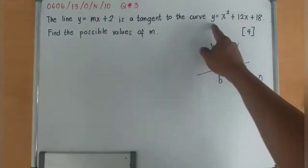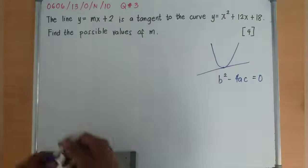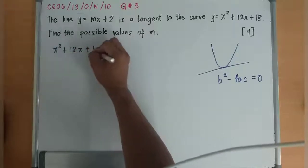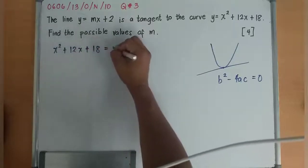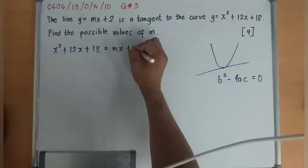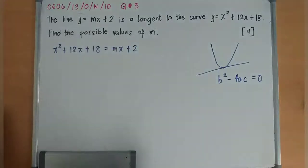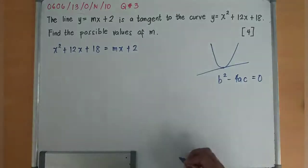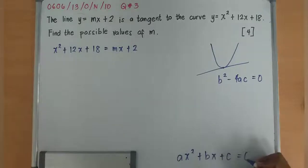...then I can have x² + 12x + 18 = mx + 2. And then find out what is a, what is b, and what is c from ax² + bx + c = 0.